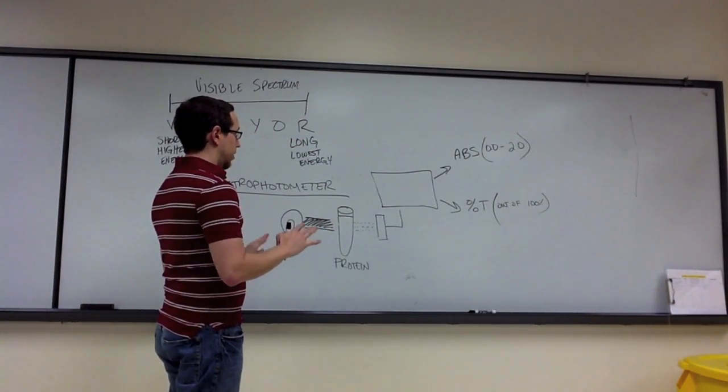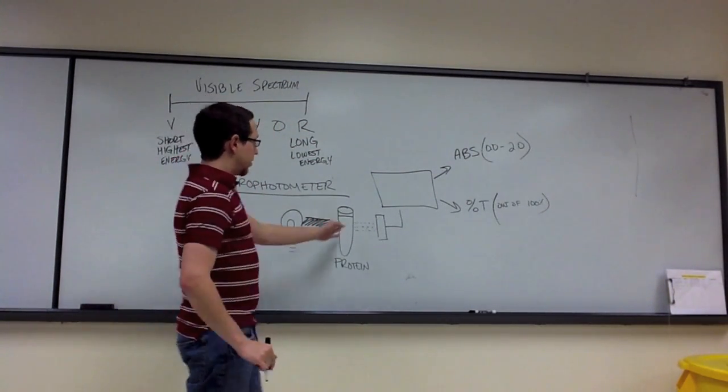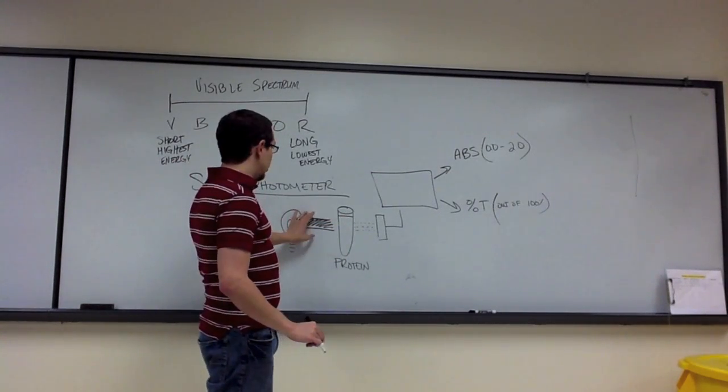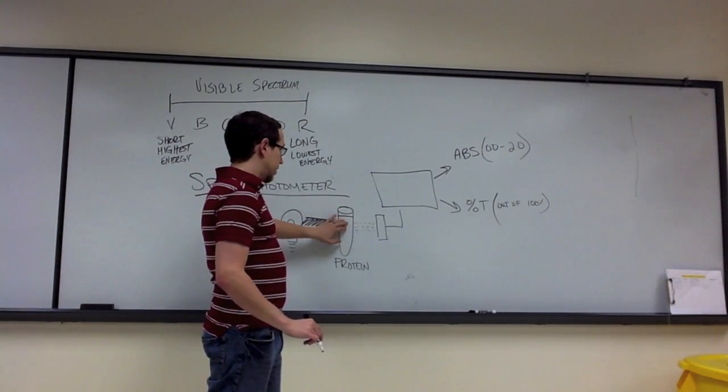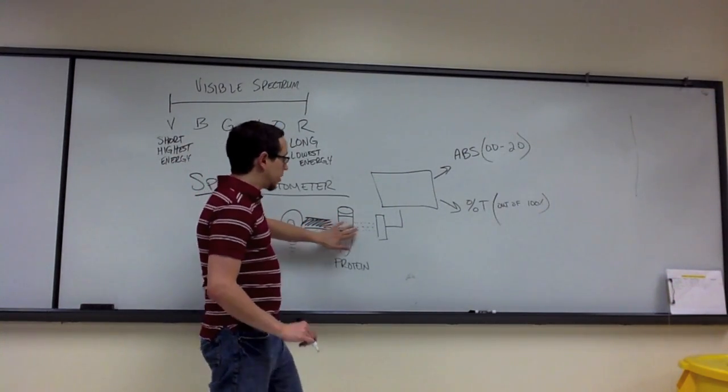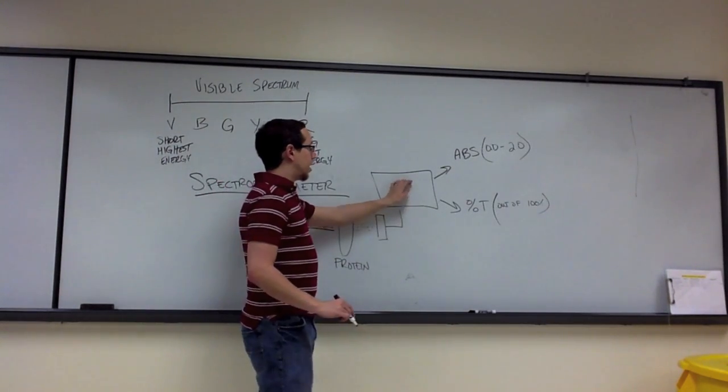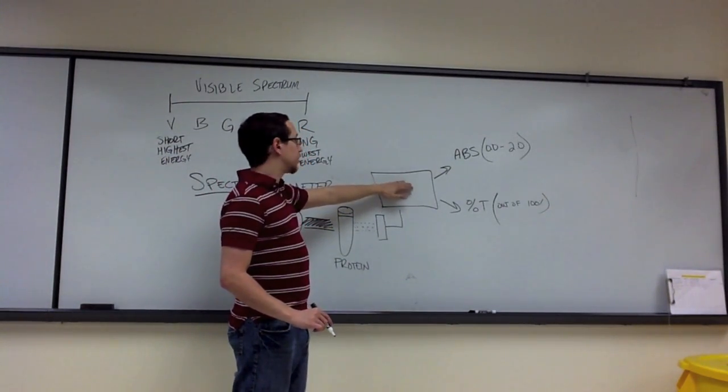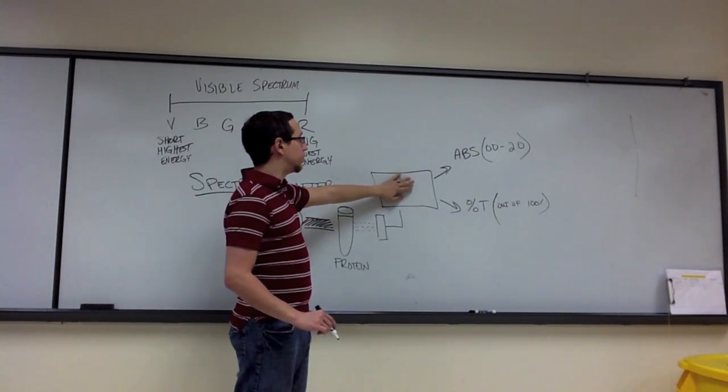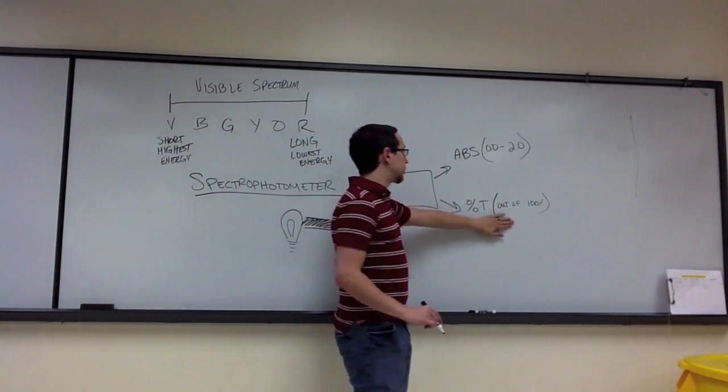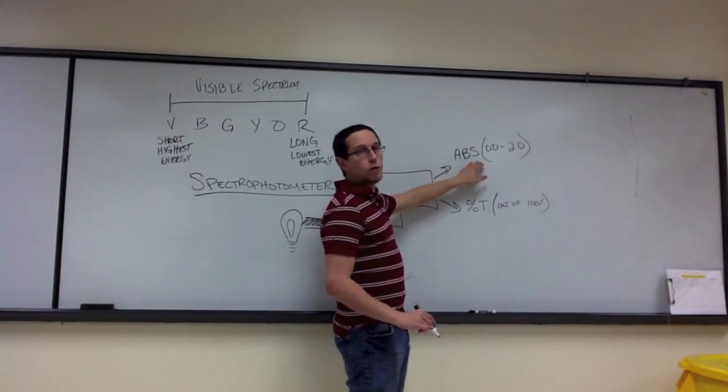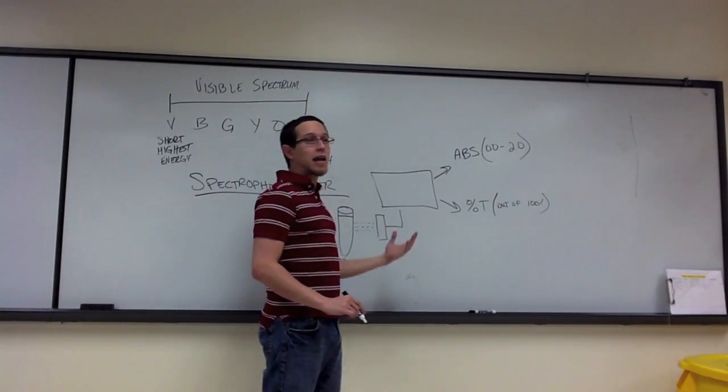Now, real quick, again, just to go over this. This protein sample is absorbing some amount of the light. Whatever it's not absorbing, it's transmitting. That is being quantified, and your digital display on your spectrophotometer gives you an output of either percent transmittance or absorbance. And you can switch between them using that mode button.